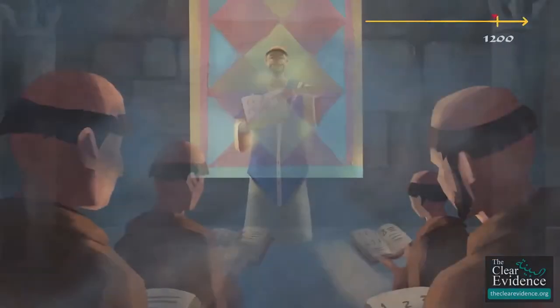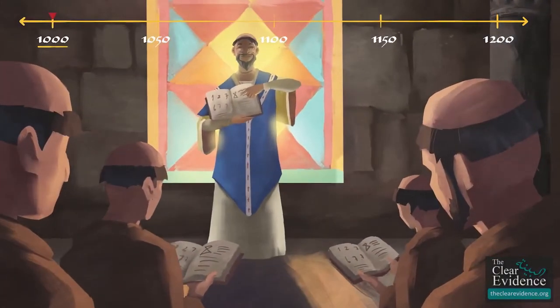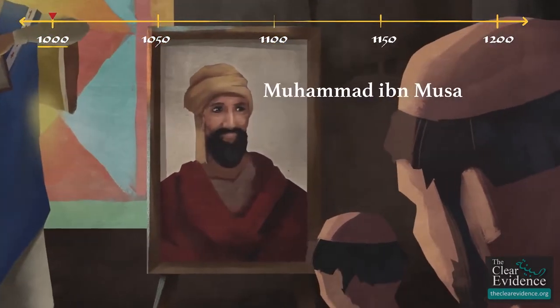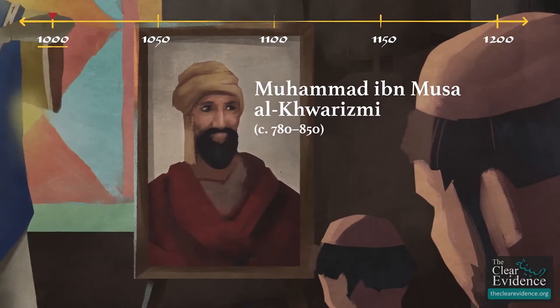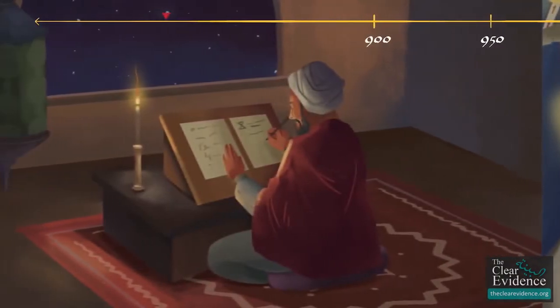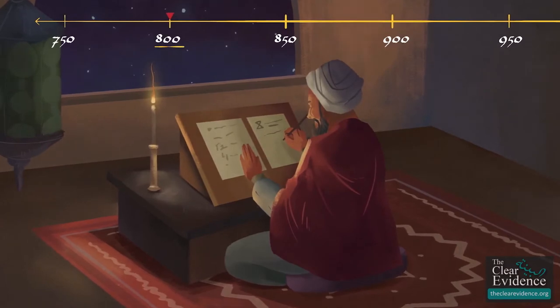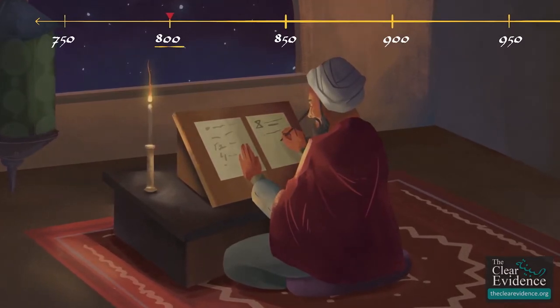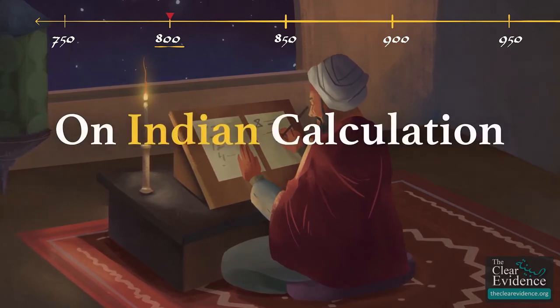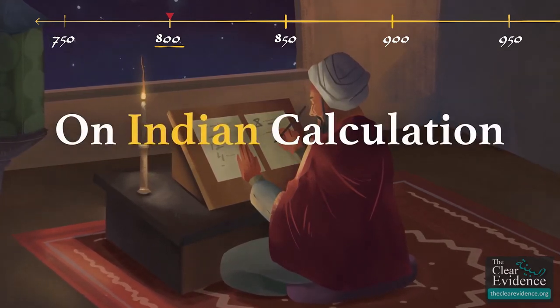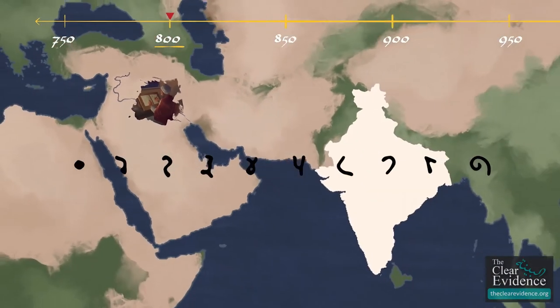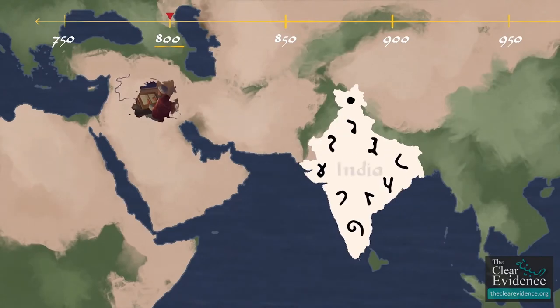Much of what Gerbert taught at his cathedral school in France was derived from the works of Muhammad ibn Musa al-Khwarizmi, a Persian scientist in Baghdad's House of Wisdom. In the early 800s, al-Khwarizmi wrote a book on what we call Arabic numerals. He named it On Indian Calculation, well aware that the symbols 1 through 9 and the place value system that makes arithmetic easy originally came from India.